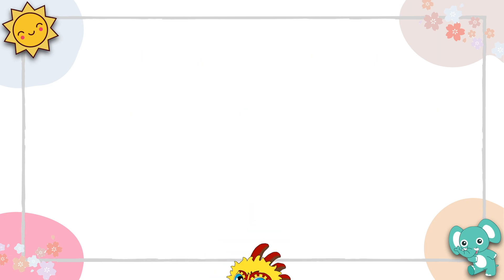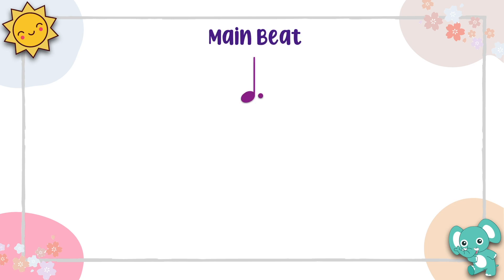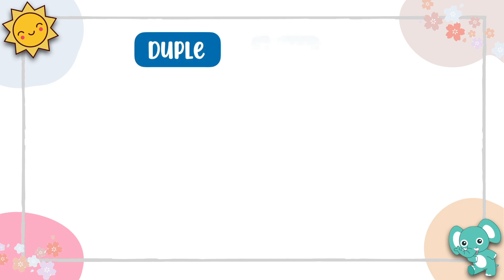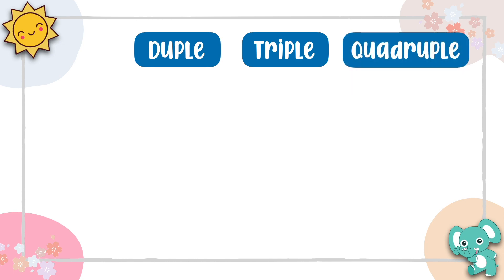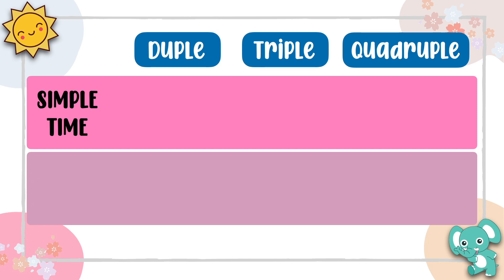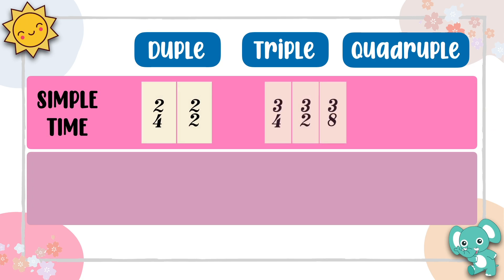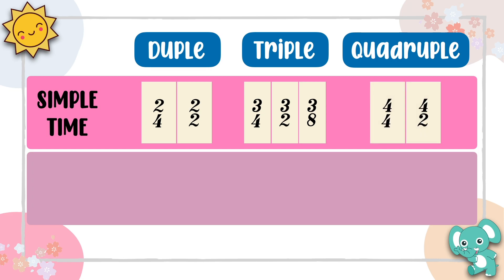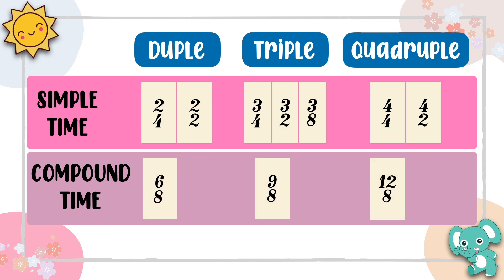Let's do some recap. Time signatures tell us about the main beat in the music and how that beat is divided up. Duple time means there are two main beats in the bar. Triple time has three main beats in a bar. And lastly, quadruple time has four main beats in a bar. Simple time signatures are time signatures where each beat can be divided into two inner beats. These are the examples of simple duple, simple triple, and simple quadruple time signatures. Other than simple time, we have compound time signatures. Compound time signatures are time signatures where each beat can be divided into three inner beats. Here are the examples of compound time signatures we have learned in the previous series of Theory of Music.